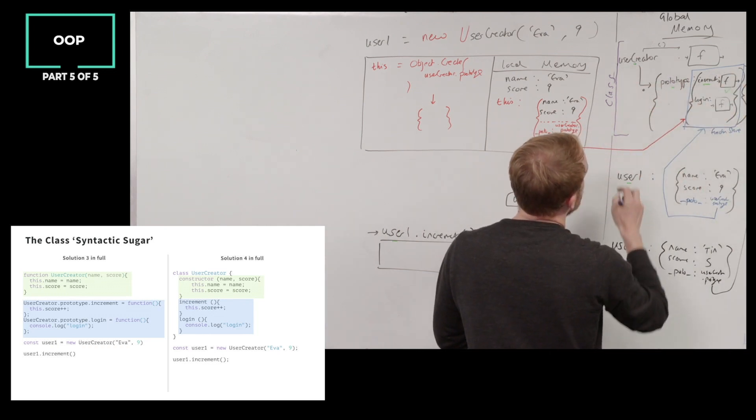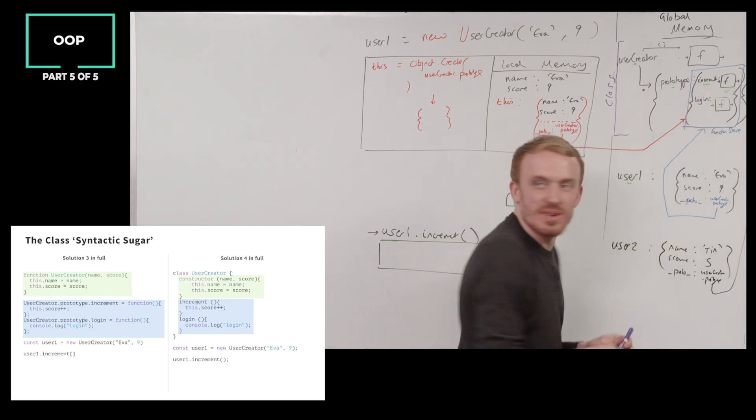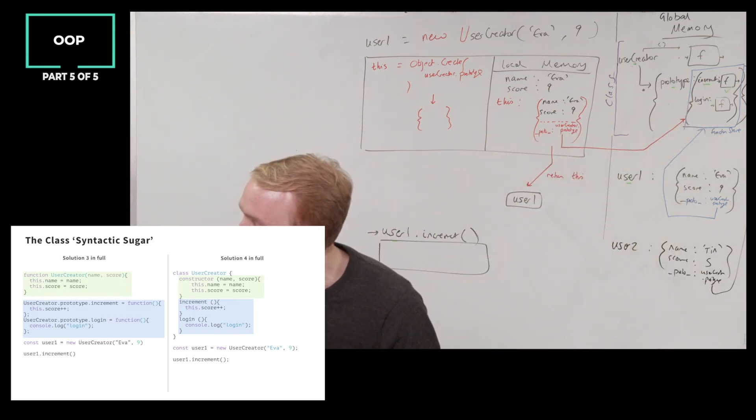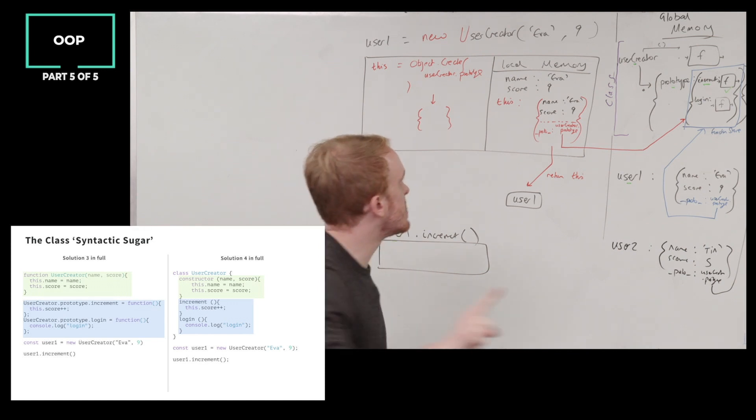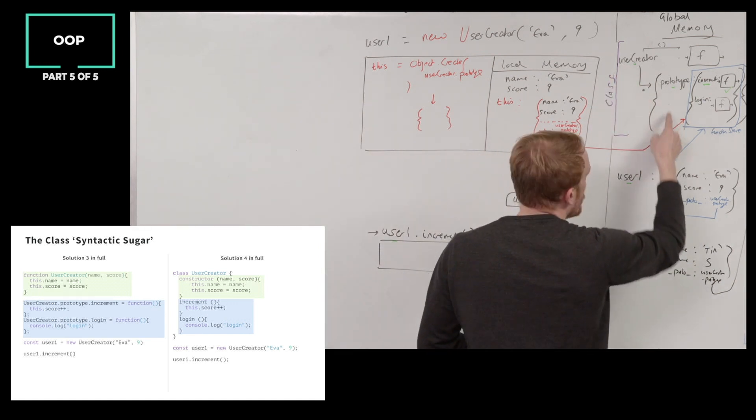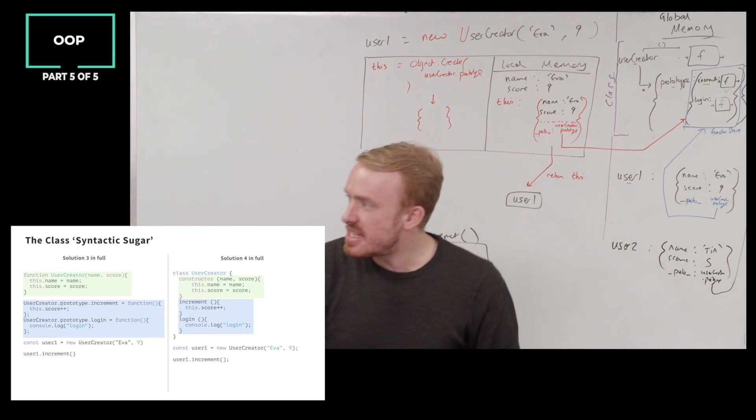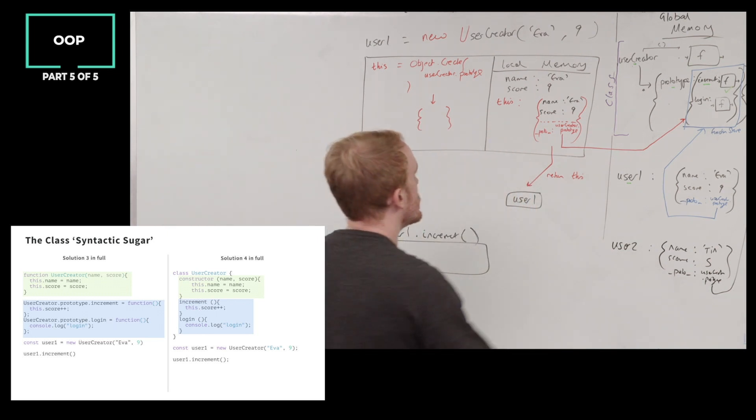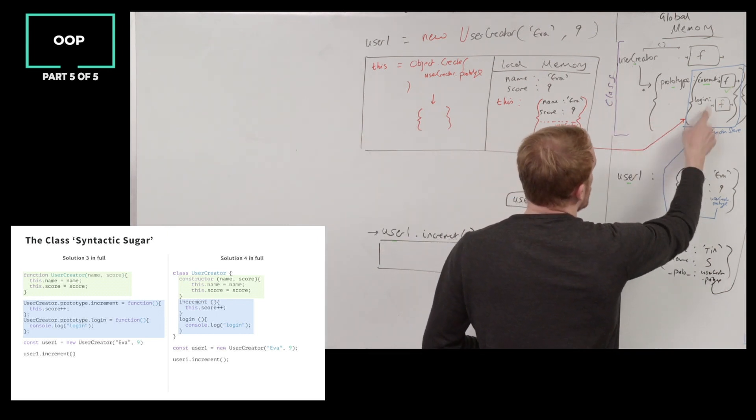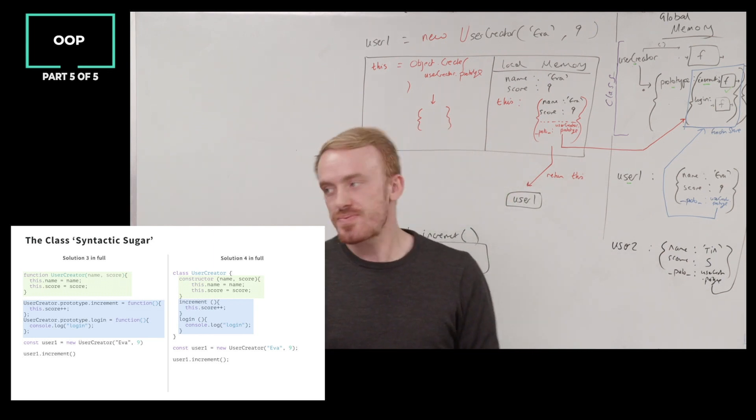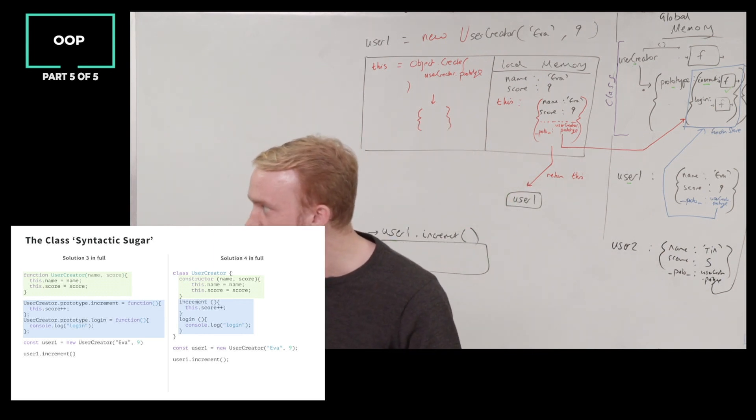All functions that I list below this constructor function are all going to be added to the user creator dot prototype shared function store. When I add an increment, when I wrote increment there, JavaScript is going to pass through this. It literally takes each of these pieces as it defines it, not like later on, as it defines it, it looks at increment, grab increment and store it in user creator dot prototype. And then it sees login and it's going to grab it and store it in user creator dot prototype dot login. And then when I run user creator or you call it here user, when we run it with new, what are we doing?